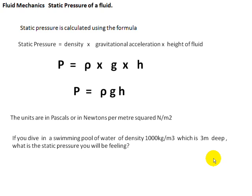We can calculate the static pressure if you are swimming in a fresh water pool. Fresh water has a density of 1000 kilograms per meter cubed. If you dive in a pool which is 3 meters deep, how much static pressure do you feel in your ear drums? To find it, we multiply the density of 1000 by 9.81 by the height of fluid, or a depth of 3 meters.